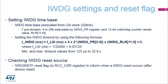The IWDG timebase is pre-scaled from the LSI clock at 32 kHz. The IWDG PR prescaler register can divide the LSI clock frequency by 4 up to 256. The watchdog counter reload value is a 12-bit value written in the IWDG RLR register. A formula can be used to determine the IWDG timeout, based on the LSI period, its prescaler, and the selected watchdog counter reload value. Given the parameter limits, the IWDG timeout value can be between 125 microseconds and up to 32.8 seconds.